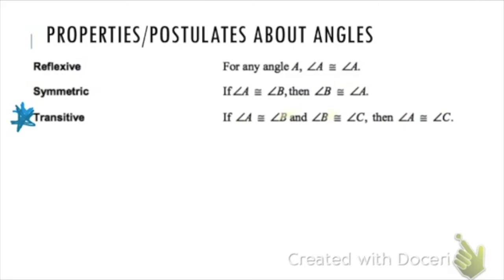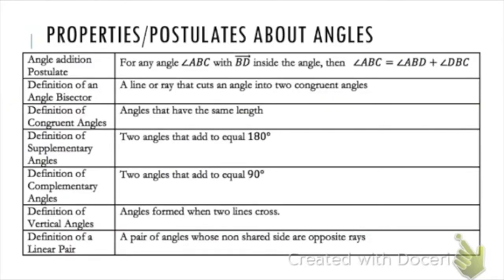If angle A is congruent to B and angle C is congruent to B, then A must be congruent to C. The angle addition postulate says if an angle is cut into parts, adding those parts gives you the bigger angle. The definition of an angle bisector says a ray or line that bisects an angle cuts it into two congruent angles. The definition of congruent angles is angles that are the same measure.